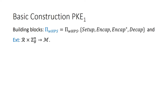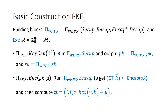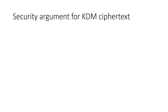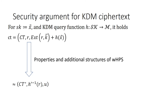With these two building blocks, we can describe our basic scheme. First, the key generation algorithm runs the setup algorithm of WGPS and outputs the corresponding (PK, SK). Second, the encryption algorithm runs the valid encapsulation algorithm of WGPS to obtain a valid ciphertext CT and its encapsulated key vector K, then computes the ciphertext in this way. We analyze the KDM security of this construction. For secret key vector x and the KDM query function H from the secret key space to the message space, it holds that the original KDM ciphertext is indistinguishable from a randomized ciphertext through using properties and the additional structure of WGPS.